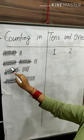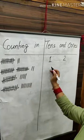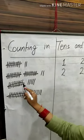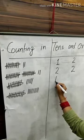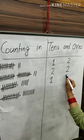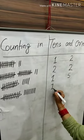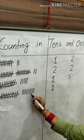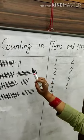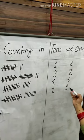Ten bundles and two. Twenty — that's two tens and two. One ten and five ones. One ten and nine ones. Results: twelve, twenty-two, fifteen and nineteen.